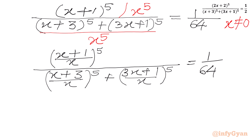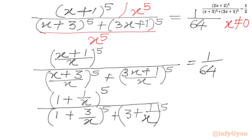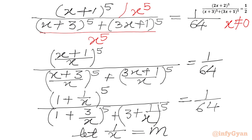Dividing through, x/x = 1, so we get (1 + 1/x)^5 over (1 + 3/x)^5 + (3 + 1/x)^5 equal to 1/64. Now we will consider our substitution: let 1/x = m. So our equation becomes (m+1)^5 over (3m+1)^5 + (m+3)^5 equal to 1/64.